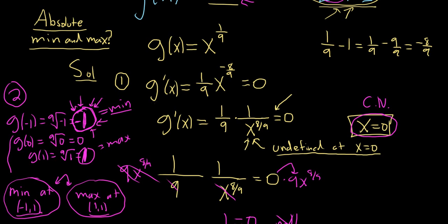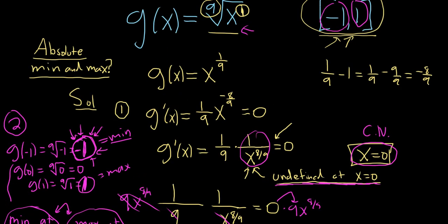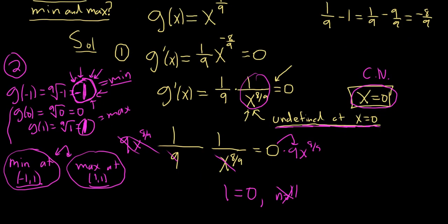Recap: you take the derivative and set it equal to 0. In this case that didn't work, but the derivative was undefined, so this one's a little trickier — people always forget about the undefined part. Then you take all your answers from step 1 and your endpoints — in this case negative 1 and 1 — and plug them back into the original function. The biggest thing you get is your max, the smallest is the min. I wrote them here as ordered pairs. I hope this video has been helpful. Good luck.